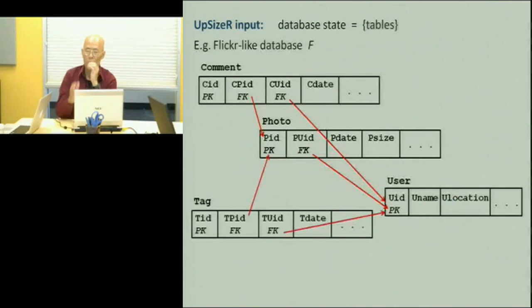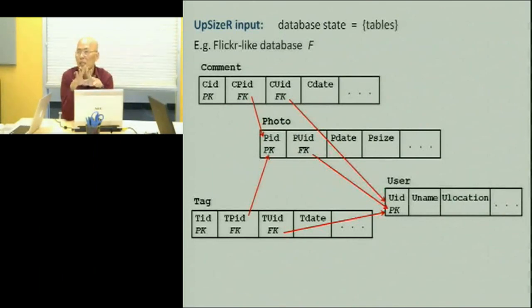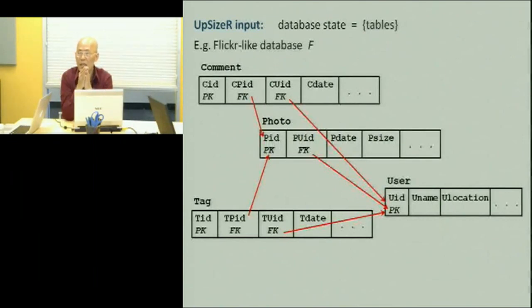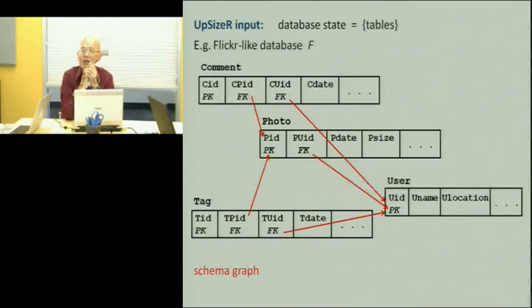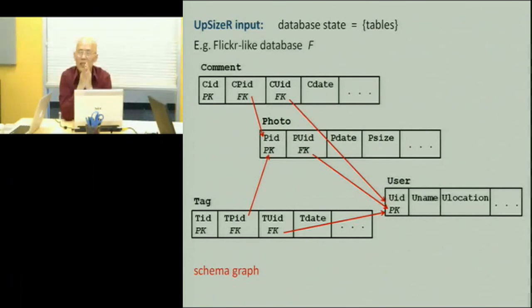For the purpose of this presentation, I'm going to have a mini Flickr database with four tables. I imagine you guys understand what the Flickr dataset is — you have users uploading photographs and other users commenting on or tagging those photographs. If you look at the relationship between the foreign keys and the primary keys in this dataset, they form a schema graph. I'm trying to map this into what you guys are doing. If this is Bigtable, then where's the schema graph?